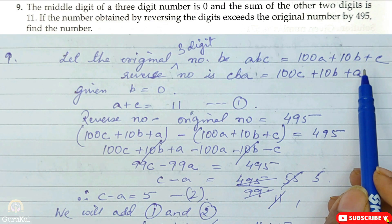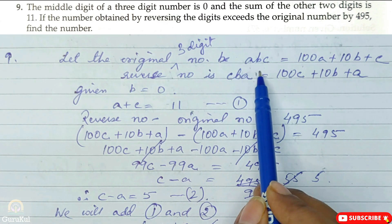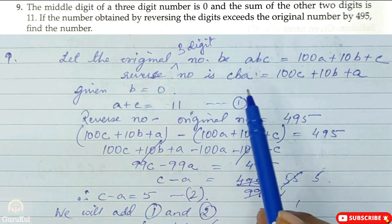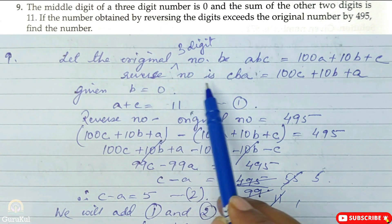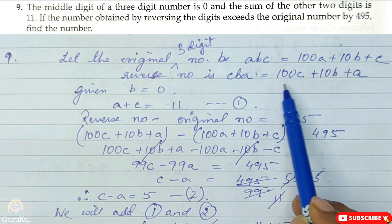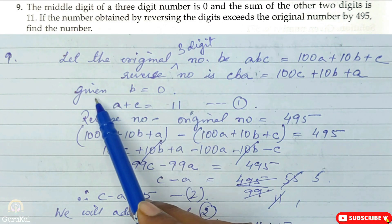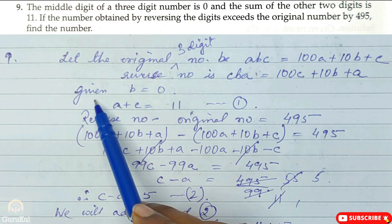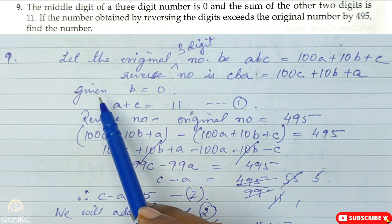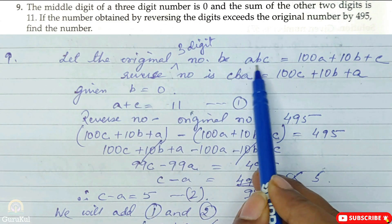The sum of the other two digits is 11. The number obtained by reversing the digits exceeds the original number by 495. We need to find the number. The reverse number is C, B, A, which in generalized form is 100C plus 10B plus A. The middle digit B is given as 0.